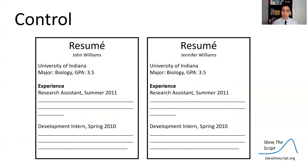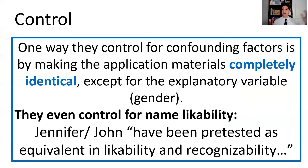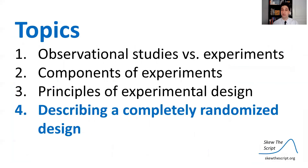Finally, they had control. One way to control for confounding factors is by making the application materials completely identical — everything except the explanatory variable, which was the gender of the name. They even controlled for name likability by pre-testing John and Jennifer to have equivalently likable names.